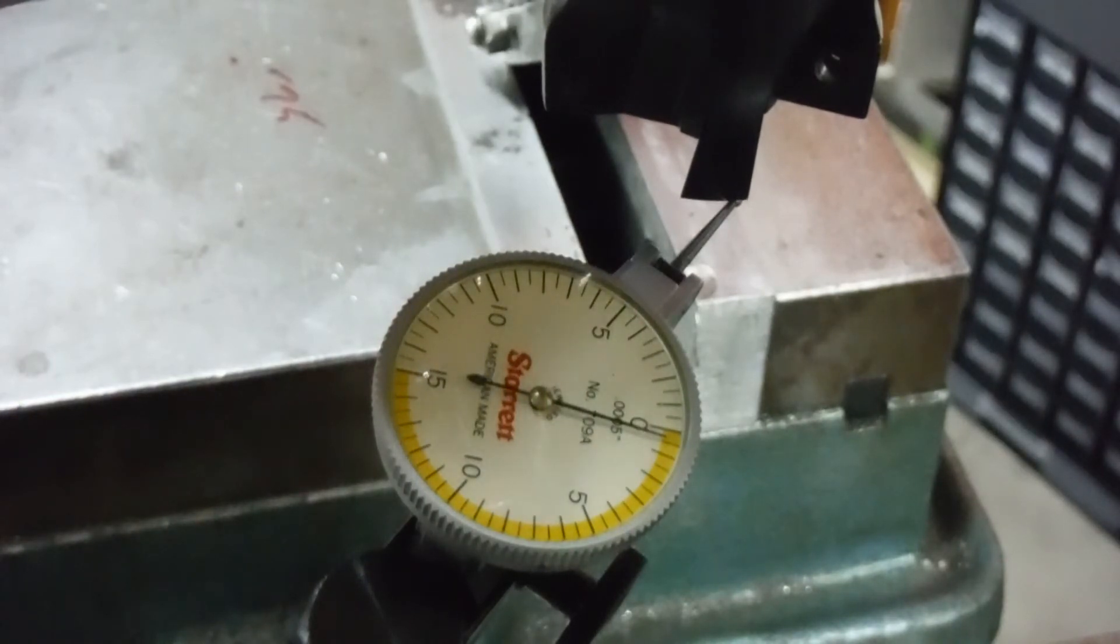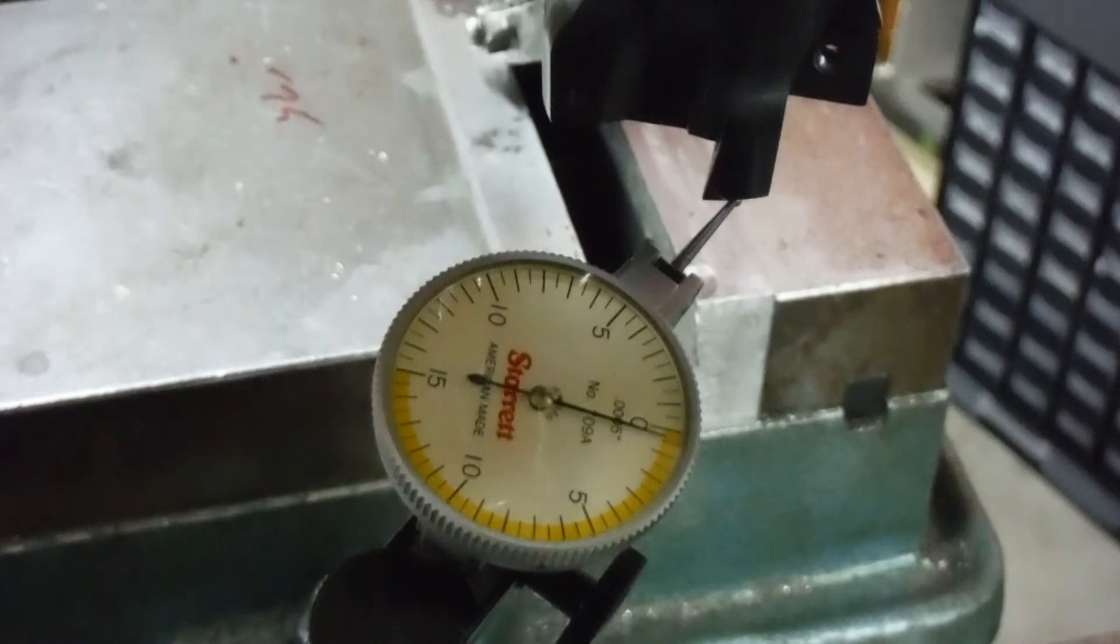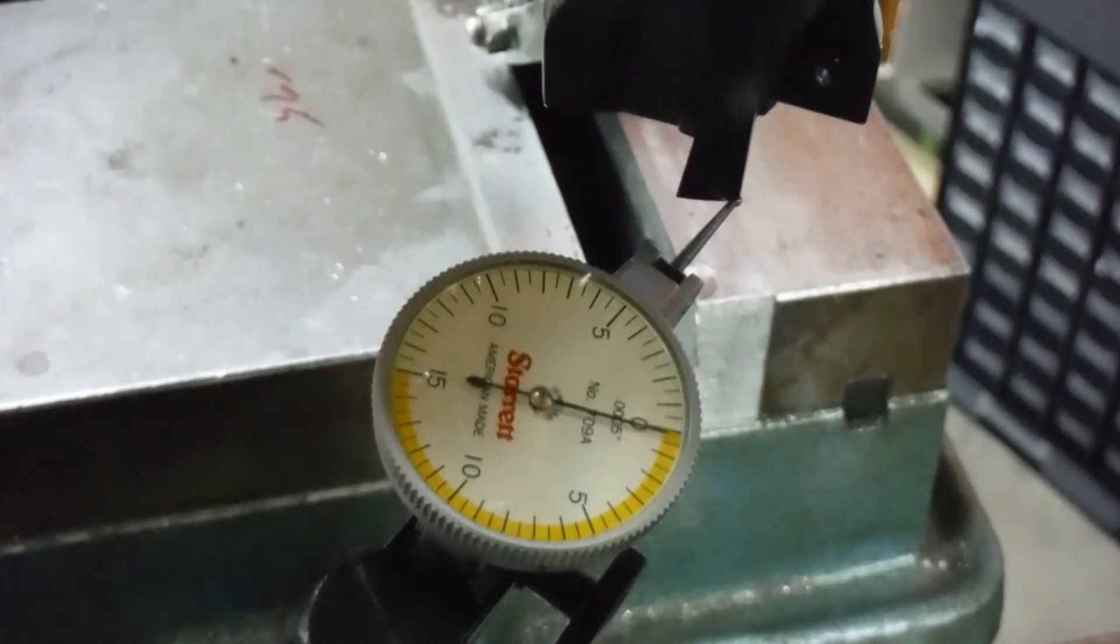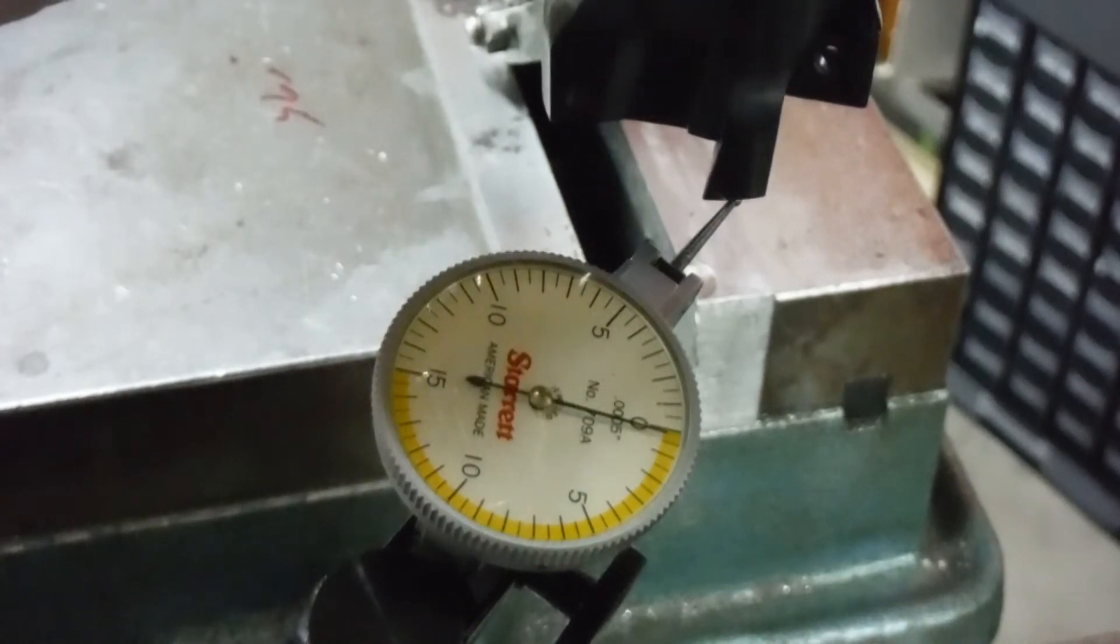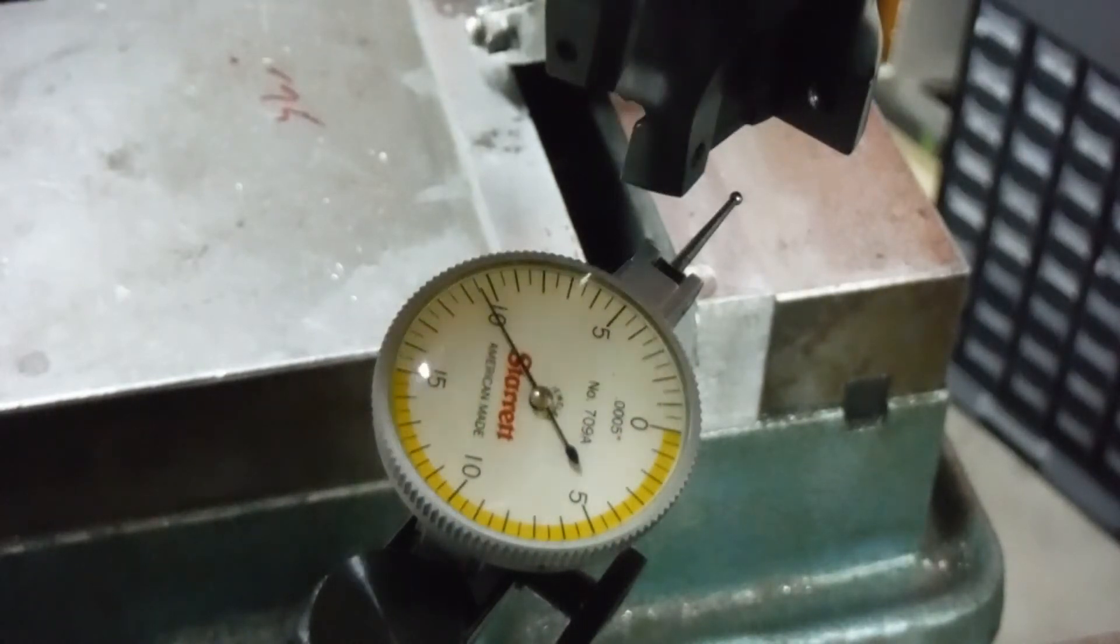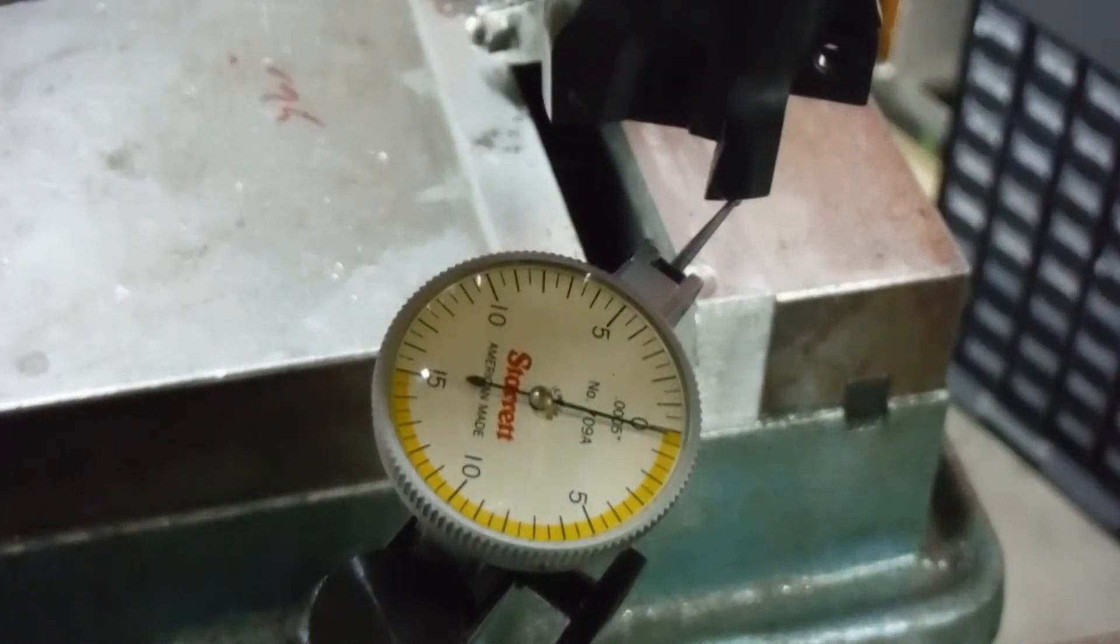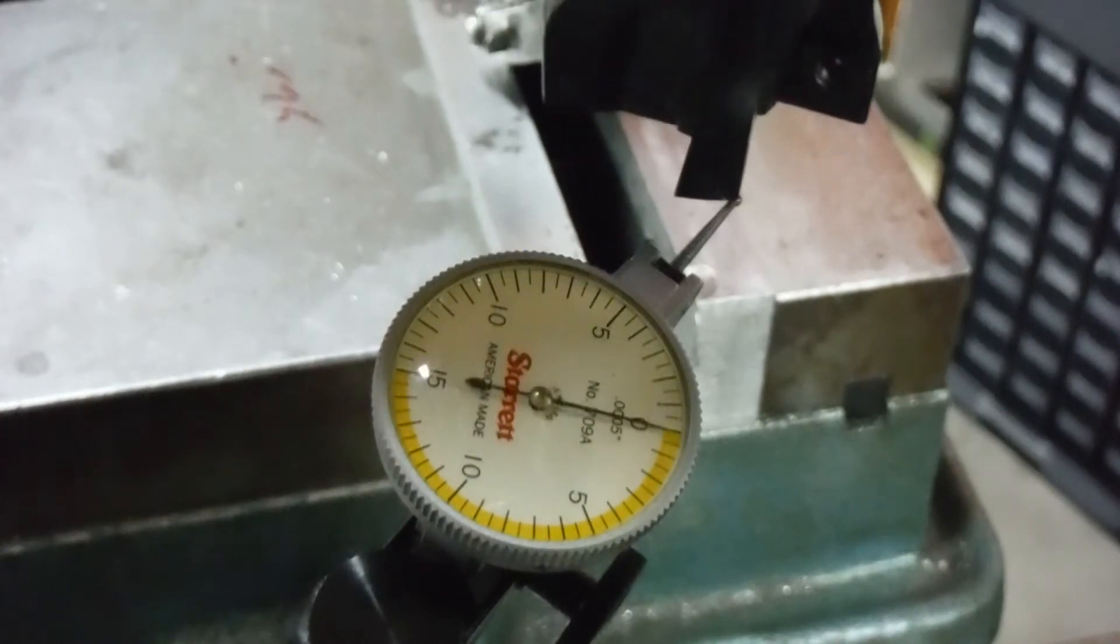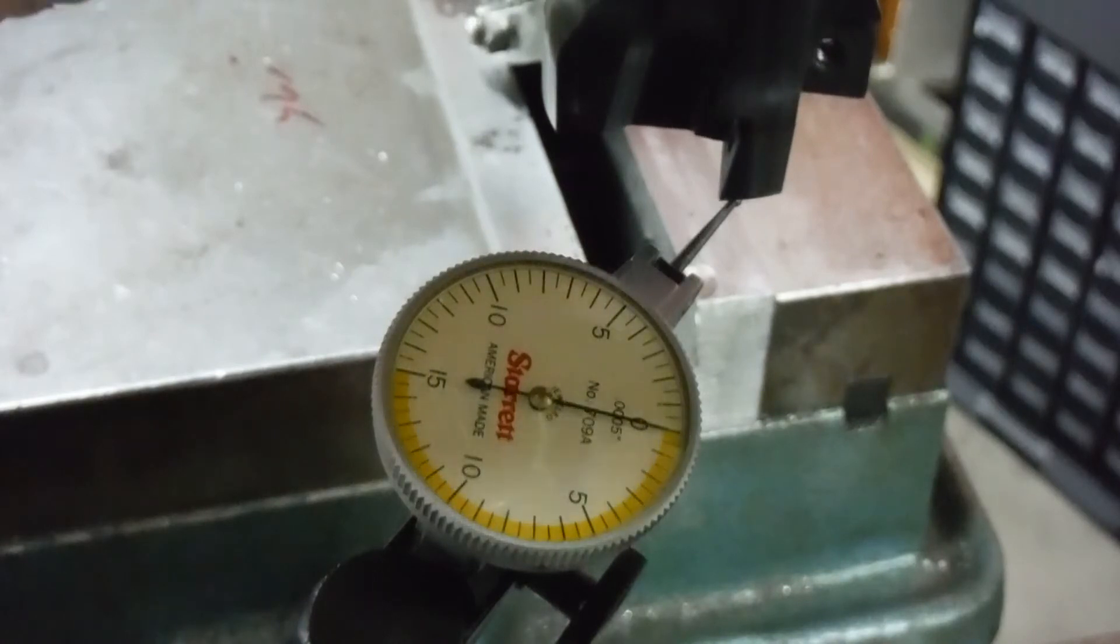That one's just a little high, not quite half a thousandth high, two to three tenths. And that one's right there with it as well. So looks like we got pretty lucky and managed to pull this thing off. Now if I can actually cut something with it.